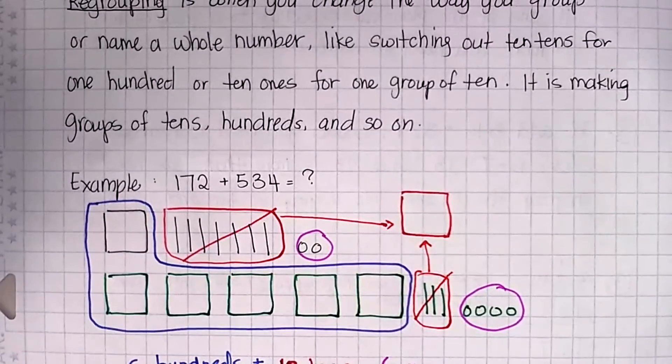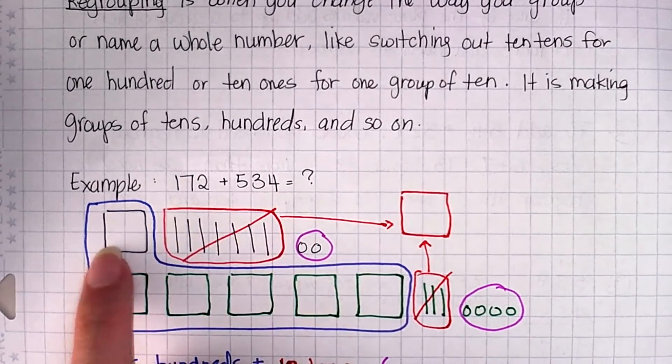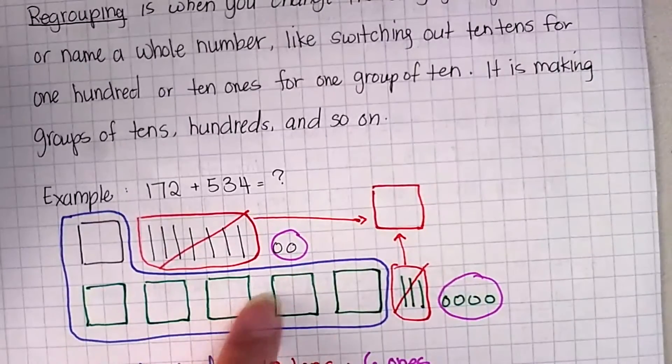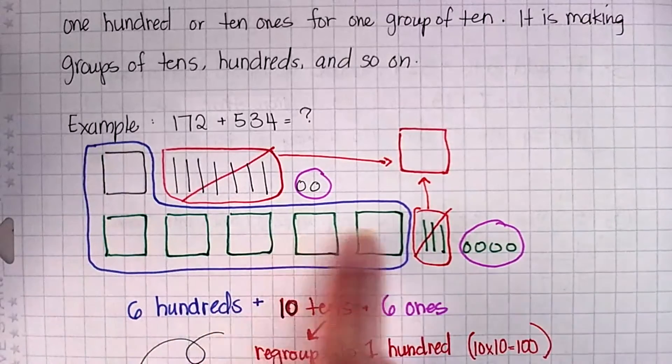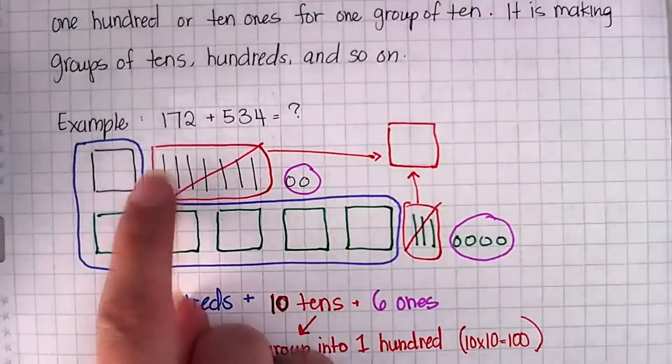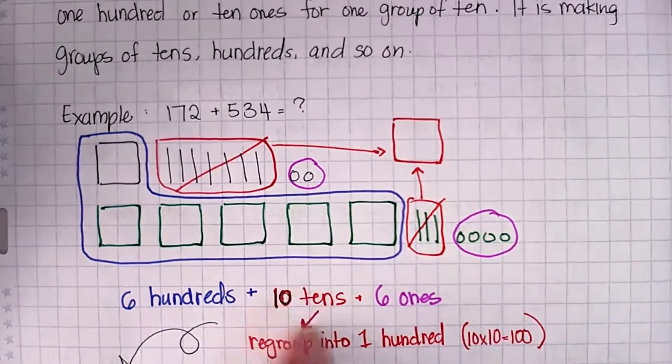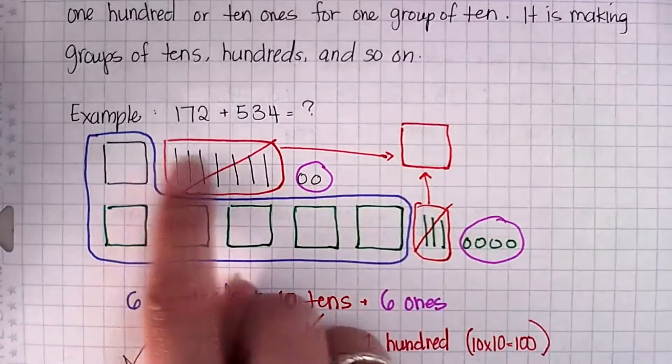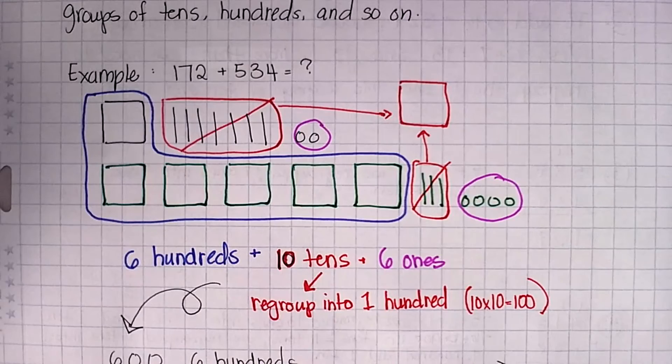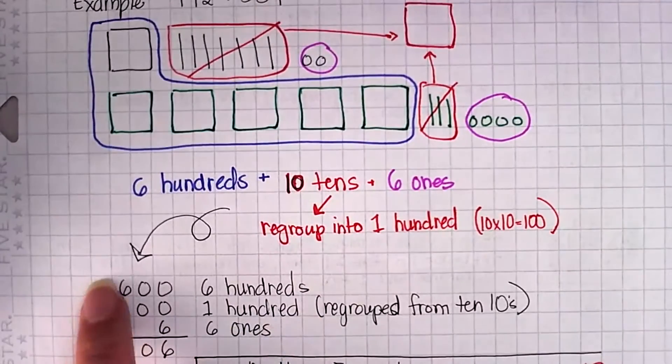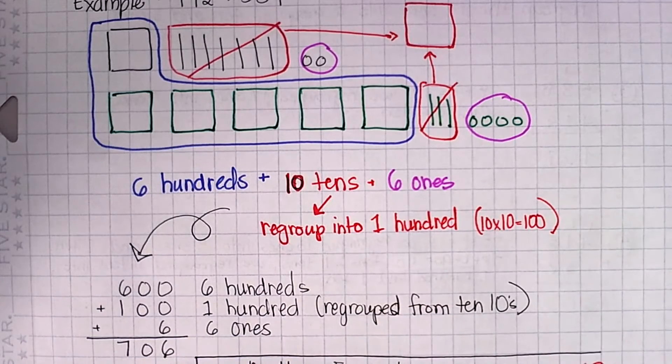So here's my first example for you. I wrote 172 plus 534. I want to find the sum. So I drew out 172 and I drew out 534. Now, over here I can see I have 1, 2, 3, 4, 5, 600s. And here I have 7 tens and 3 more tens. That's 10 tens. And I had 6 ones. So since I have 10 tens, I'm going to take these 10 tens and switch them out for a group of 100 instead, because 10 times 10 is 100. So now I had my 600s plus my 100 that I regrouped from 10 tens plus my 6 ones gave me an answer of 706.